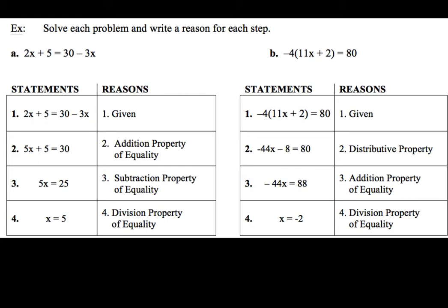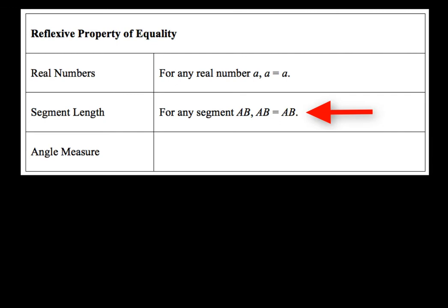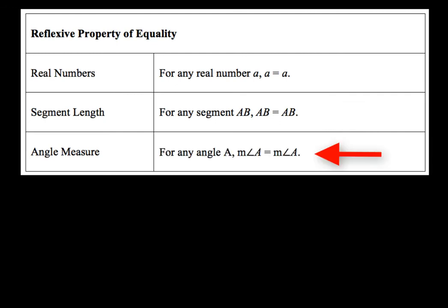Now we're going to take a look at some more properties. We've got three of them: the reflexive property of equality, the symmetric property of equality, and the transitive property of equality. First up is the reflexive property of equality — for any real number A, A equals A. Common sense. The same thing can be said about segment lengths: for any segment AB, AB is going to be equal to AB. Likewise, for angle measure, for any angle A, the measure of angle A is going to equal the measure of angle A.